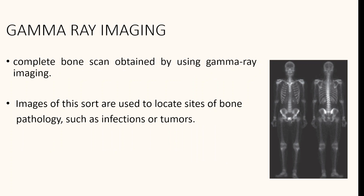Major uses of imaging based on gamma rays include nuclear medicine and astronomical observations. In nuclear medicine, the patient is injected with a radioactive isotope that emits gamma rays as it decays. Images are produced from the emissions collected by gamma ray detectors. The image here shows a bone scan obtained using gamma ray imaging. These images can be used to detect infections and tumors in bones.